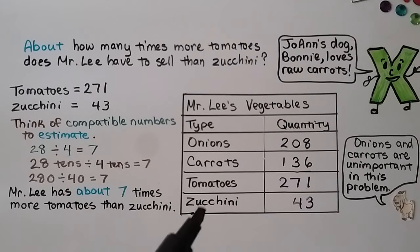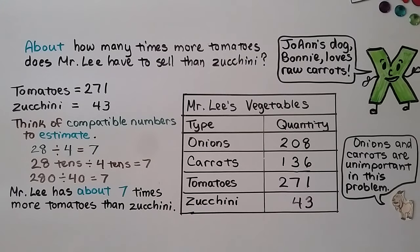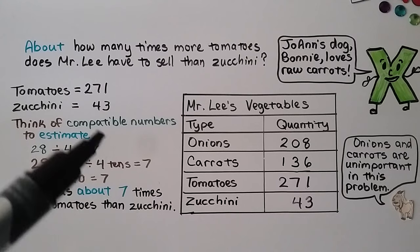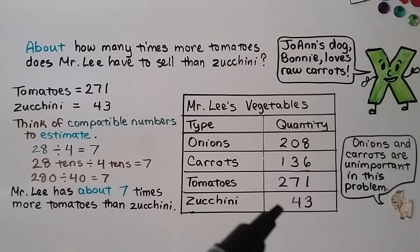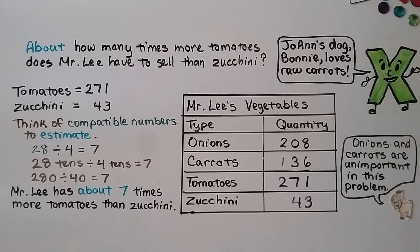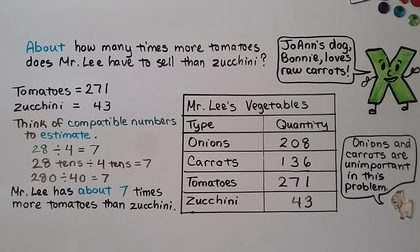Here we have a word problem with a frequency table — Mr. Lee's vegetables — showing types of vegetables and how many he has. The question asks: about how many times more tomatoes does Mr. Lee have to sell than zucchini? There are 271 tomatoes and 43 zucchini. Using compatible numbers: 28 divided by 4 equals 7, so 280 divided by 40 is about 7. He has about 7 times more tomatoes than zucchini. Notice that onions and carrots were not important for this problem — sometimes tables or word problems include irrelevant information that we need to identify and ignore.